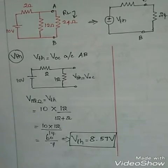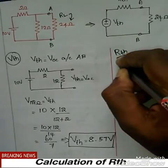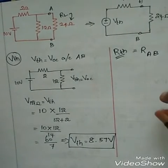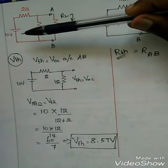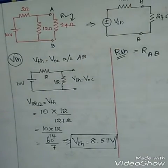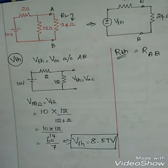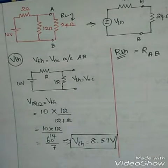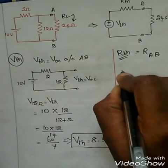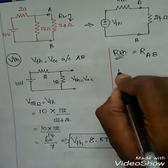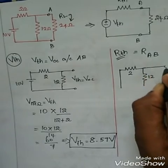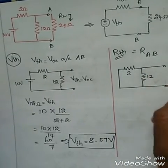Now we find the Thevenin's resistance RTH — the resistance across terminals A and B while replacing all energy sources by their internal resistances. There is one independent voltage source, whose internal resistance is 0, so we replace it with a short circuit. The remaining circuit has 2 ohms and 12 ohms, with the load resistance removed. The terminals A and B are identified.